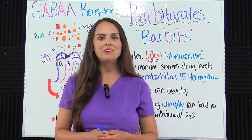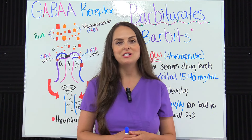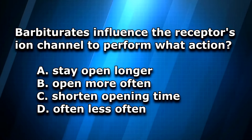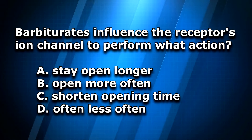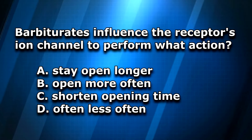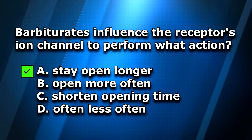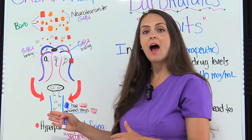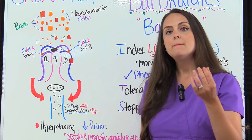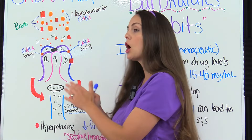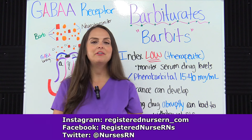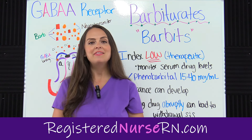Quiz question: Barbiturates influence the receptor's ion channel to perform what action? A) Stay open longer. B) Open more often. C) Shorten opening time. D) Open less often. The answer is A — stay open longer, because barbiturates increase the duration of how long the ion channel stays open, allowing more chloride ions to enter and hyperpolarize the cell. Benzodiazepines cause the channel to open more often. Access more free quiz questions via the link in the YouTube description below. Thank you for watching!